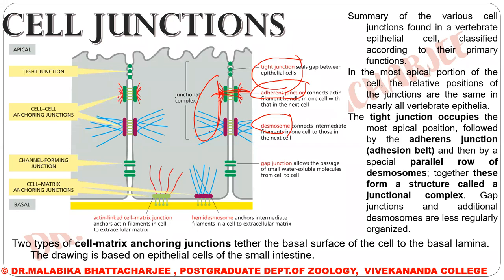So for cell-cell connection, they are connecting the cytoplasmic filaments between two cells. Together, the tight junctions, the adherence junctions, and the desmosomes are known as junctional complexes.